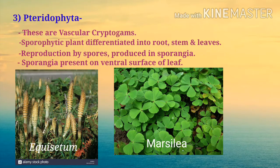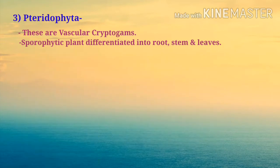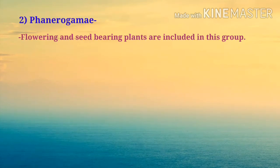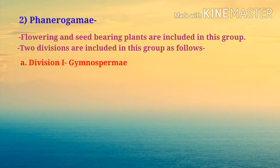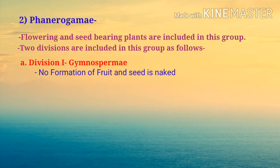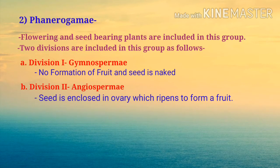Cryptogams have three divisions: thallophyta, bryophyta, and pteridophyta. Thallophyta includes algae and fungi. The second division is bryophyta and the third is pteridophyta. Now let's see what phanerogams are. Phanerogamy — flowering and seed-bearing plants are included in this group. There are two divisions: division one is gymnosperm, in which there is no formation of fruit and the seed is naked. Division two is angiosperm, in which the seed is enclosed in an ovary, which ripens to form a fruit.